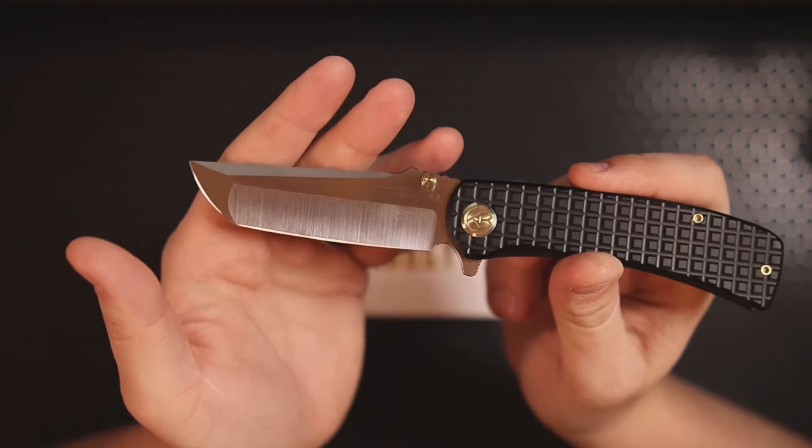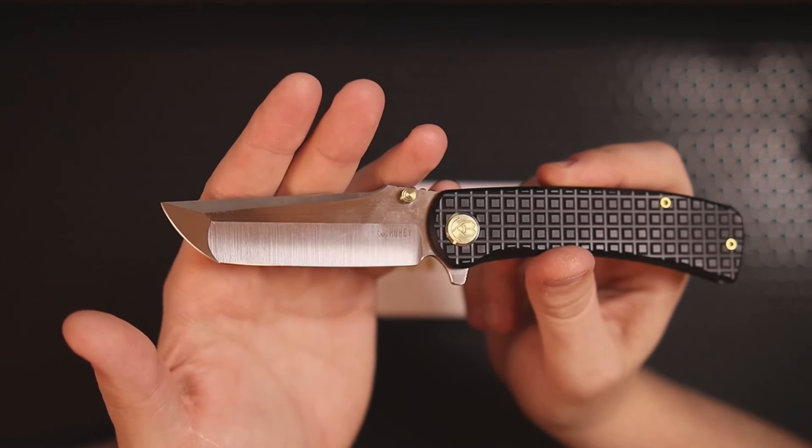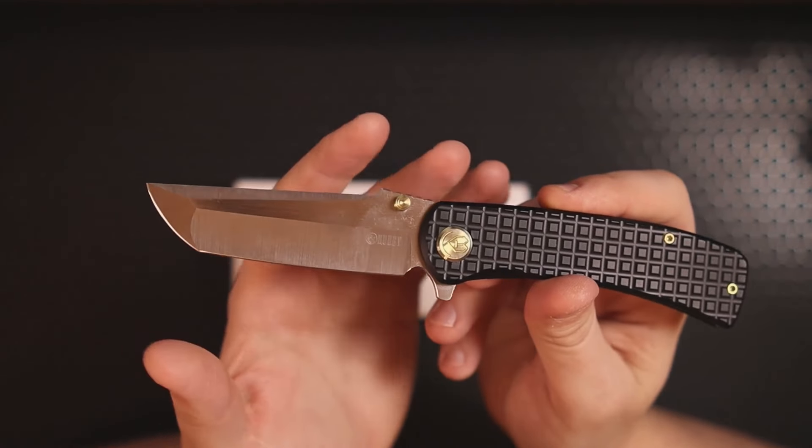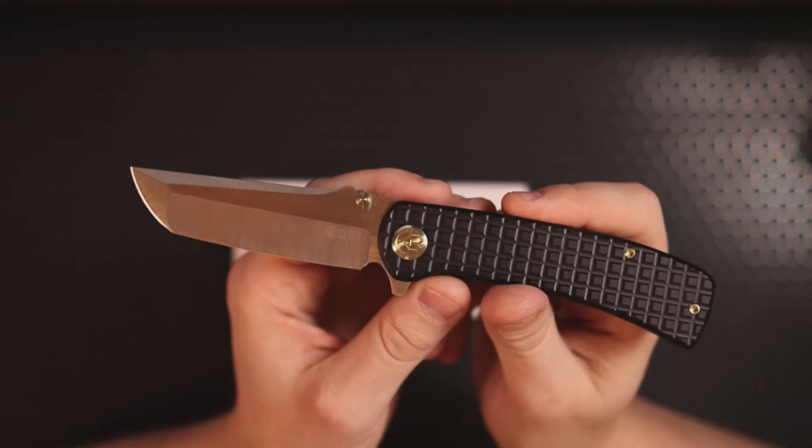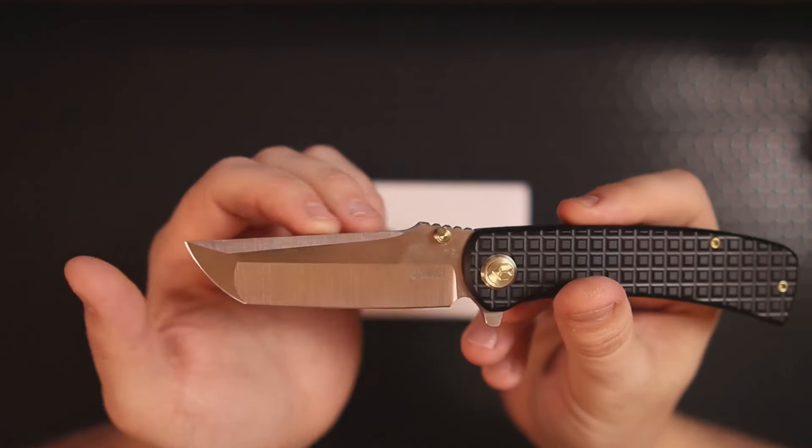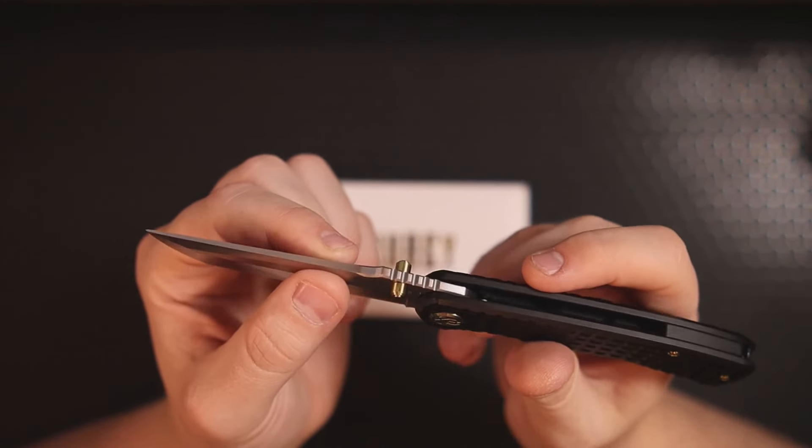We're looking at a compound grind with a hollow on the main and then a flat near the tip. So you could technically call this a tanto. Is it an American tanto? Is it a Japanese tanto? I'm not entirely sure. Let me know what your thoughts are in the comment section down below, but either way it looks gorgeous.